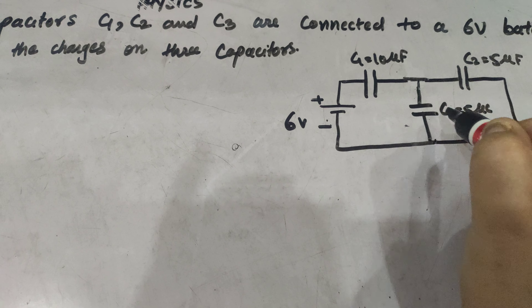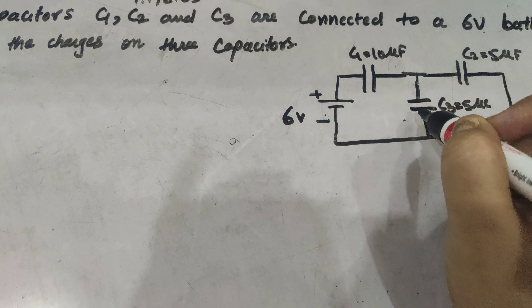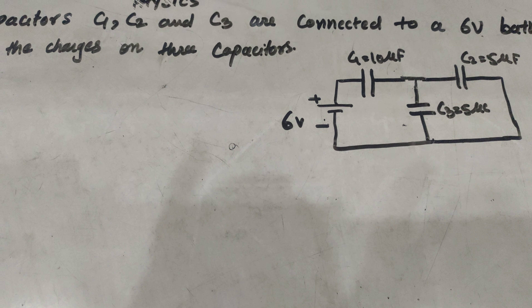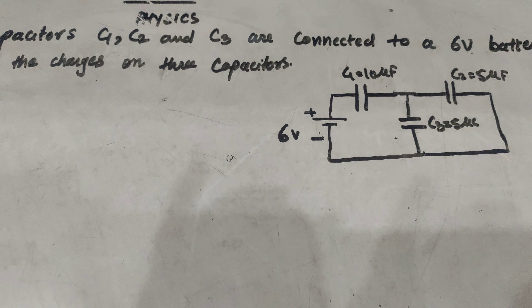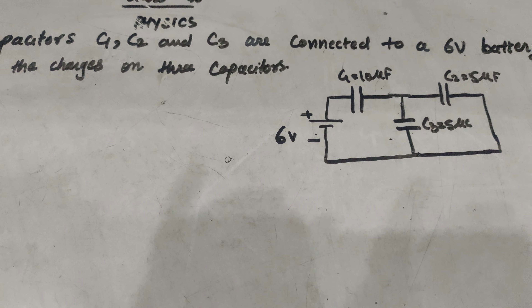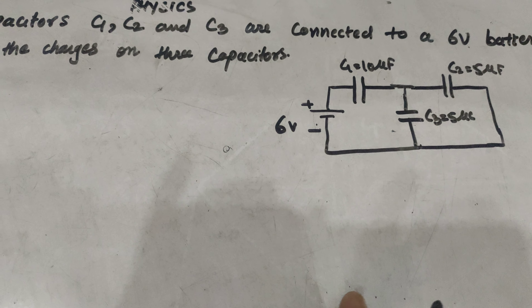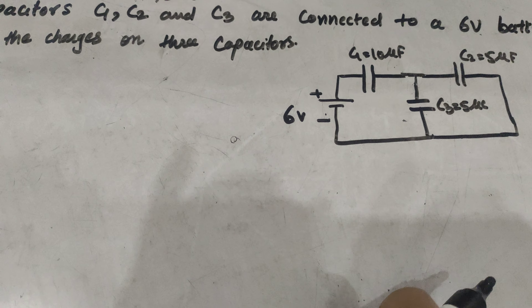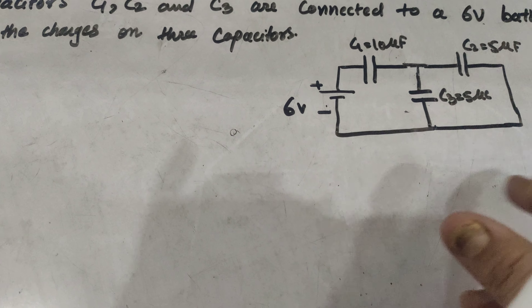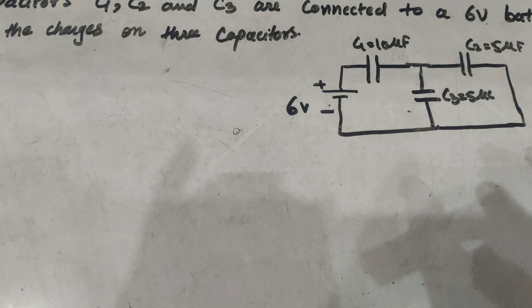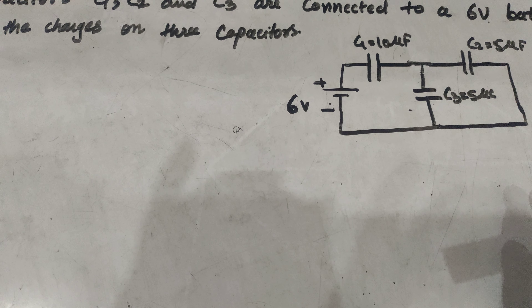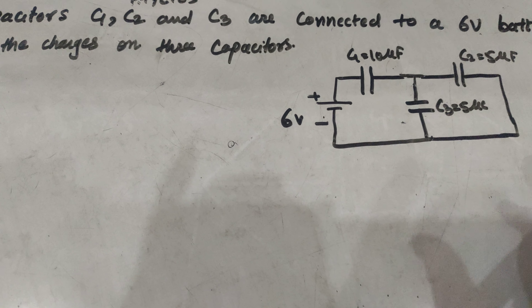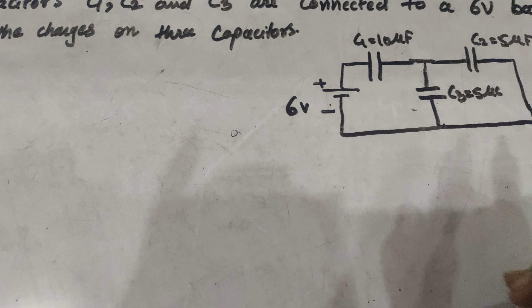To solve the capacitor problem, the one trick is we have to follow a single path. At the point where the path divides, it means the charges are divided — that is a parallel combination. If charges don't get divided, that is a series combination.